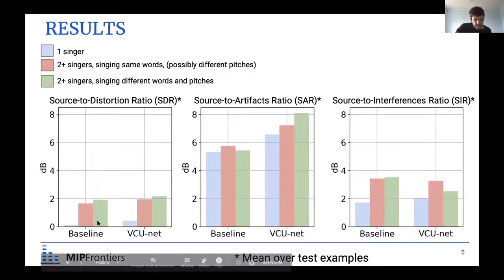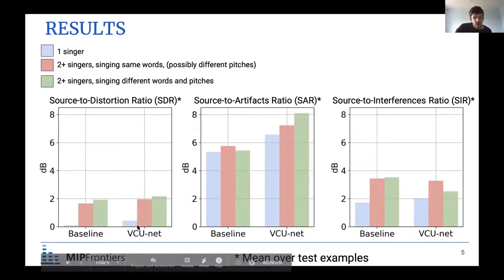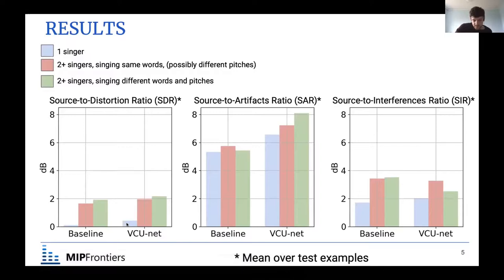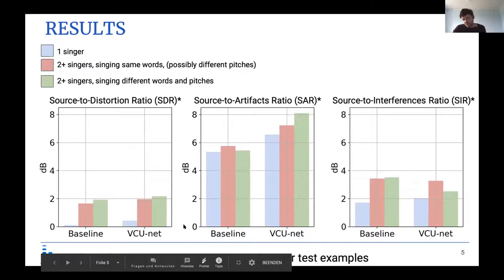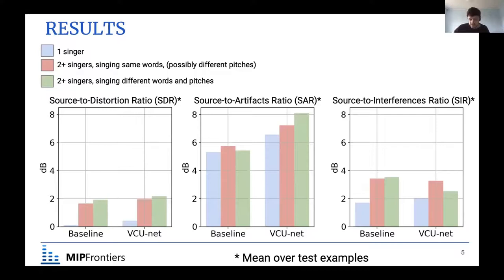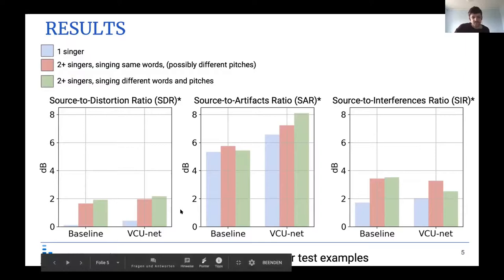Particularly, for the case where there is only one singer, all three metrics improve when comparing the informed model with the baseline. Interestingly, the metric scores are lower for the single-singer case compared to multiple singers, which may seem counterintuitive. We think this is because with only one singer, there may be less energy in the vocals, making them more difficult to find.